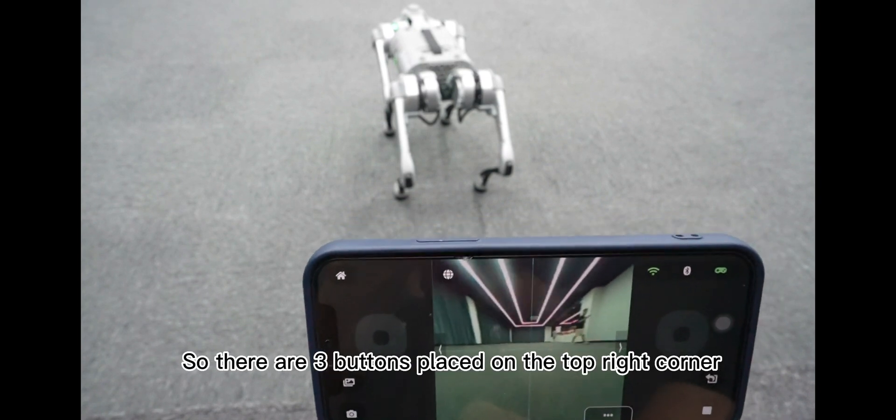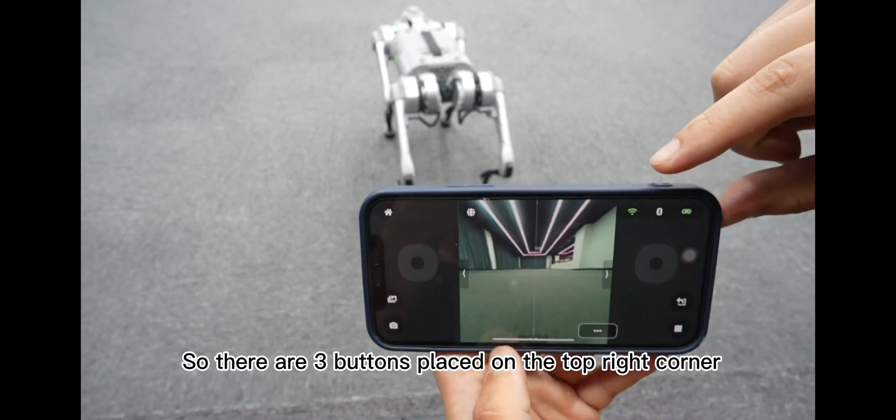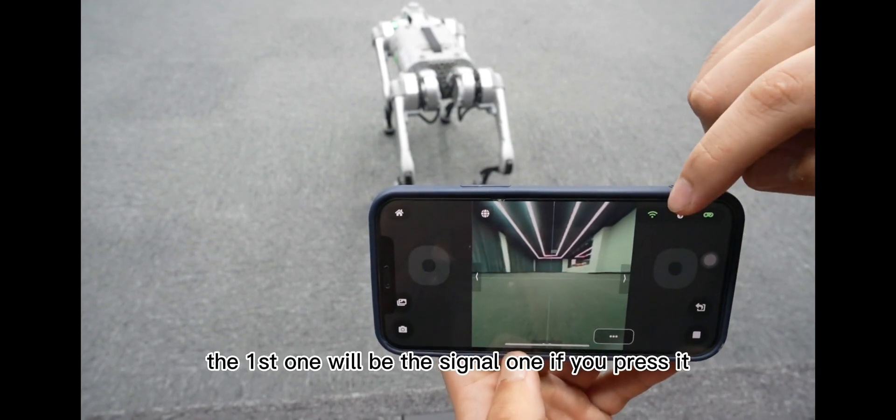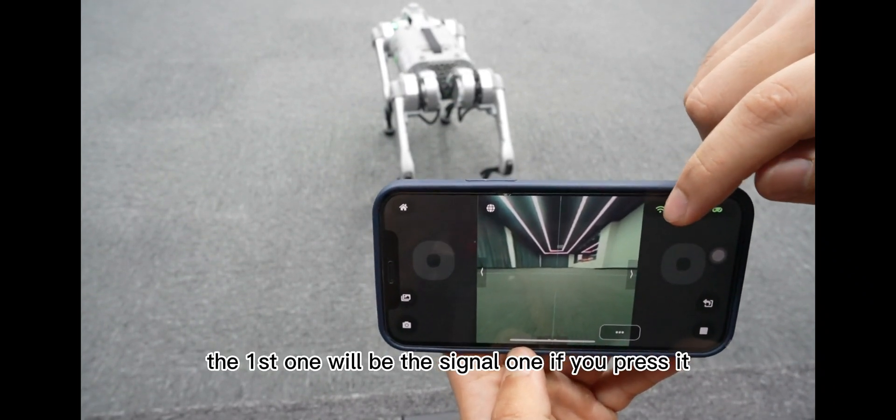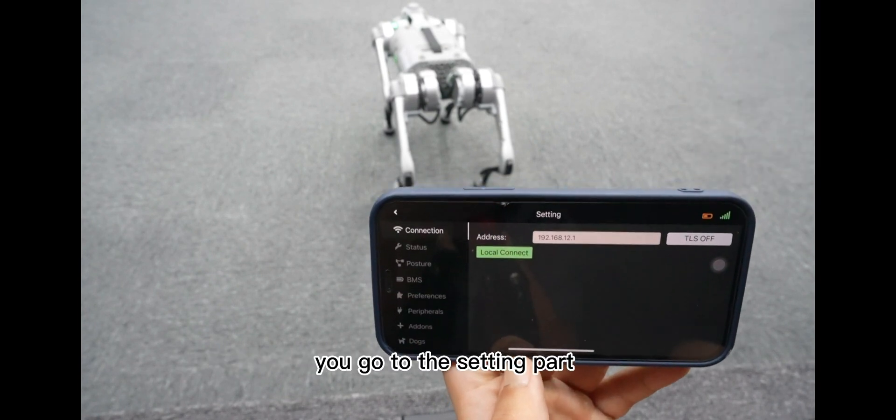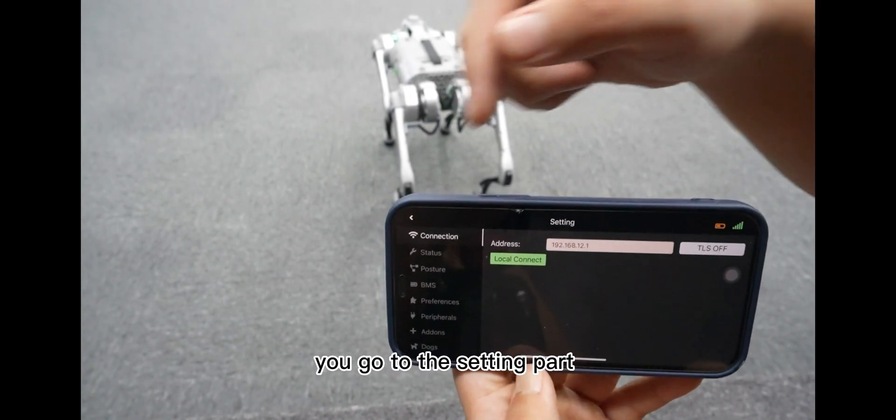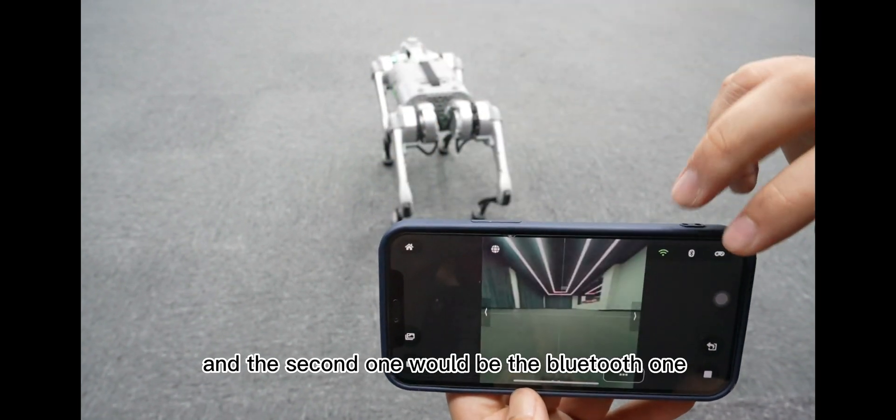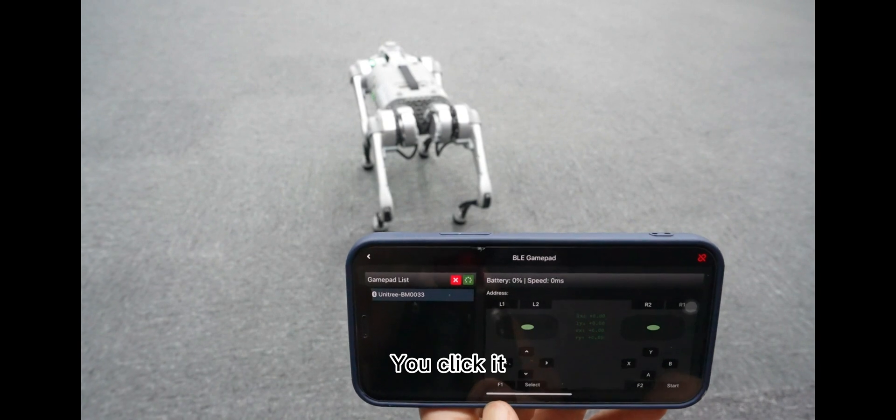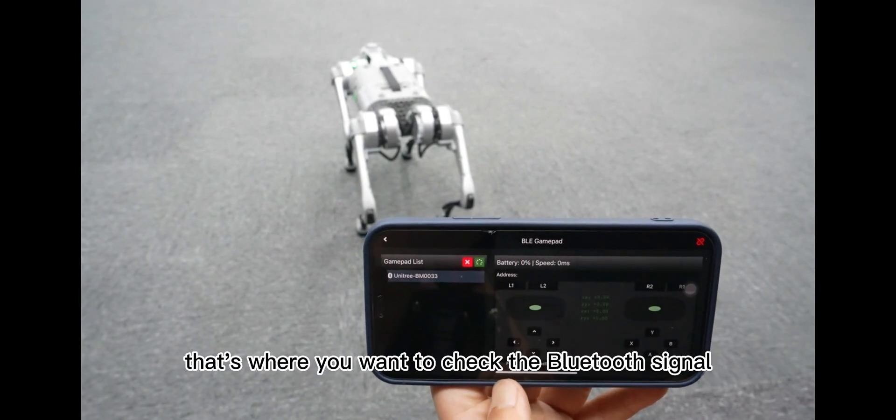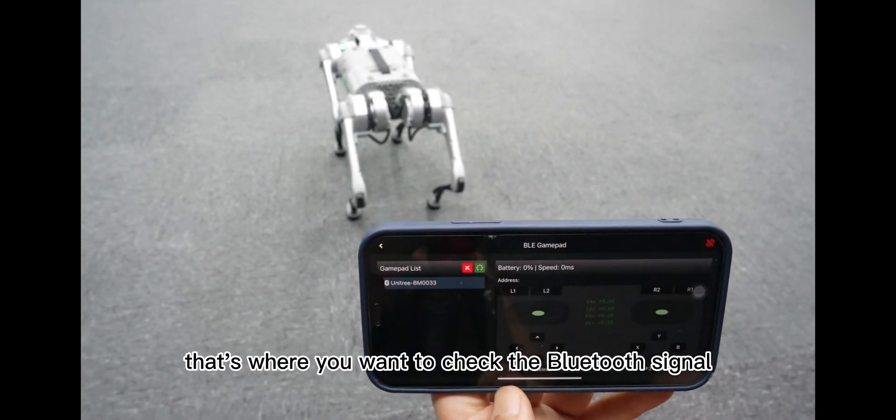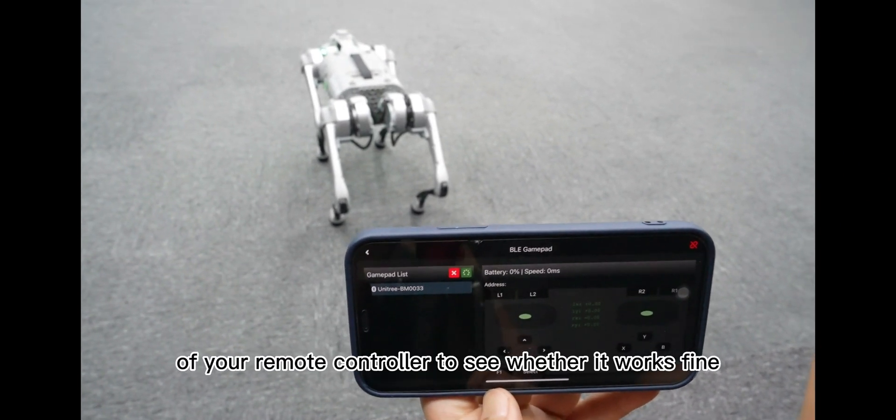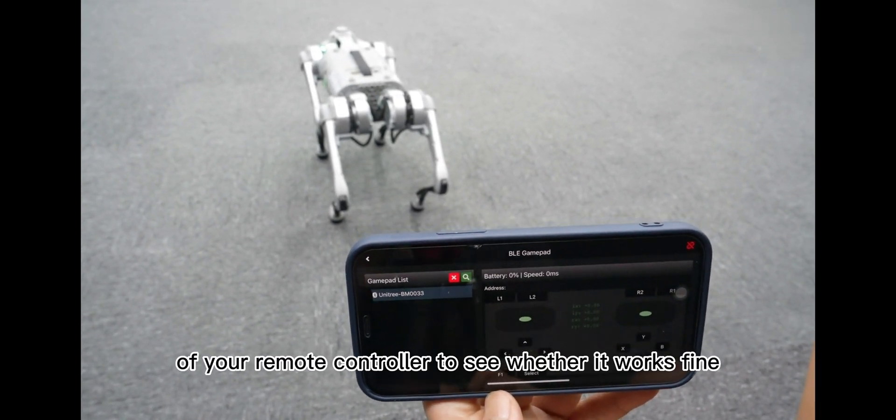So there are three buttons placed on the top right corner. The first one will be the signal one. If you press it, you go directly to the second part. And the second one will be the Bluetooth one. You click it. That's where you want to check the Bluetooth signal of your remote controller to see whether it works fine.